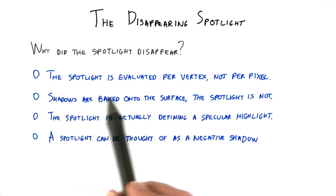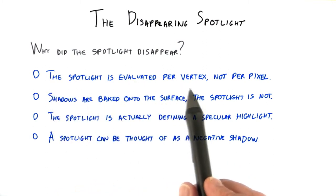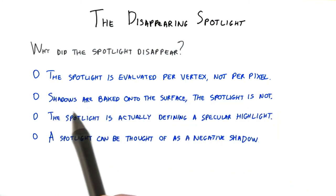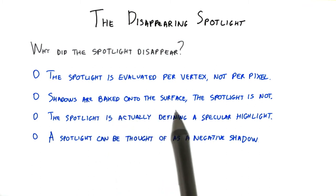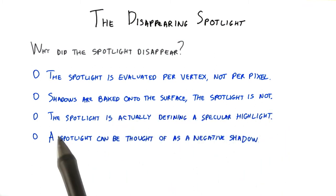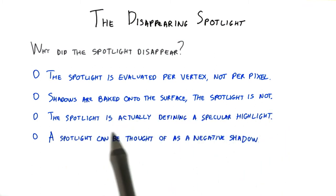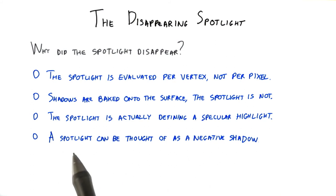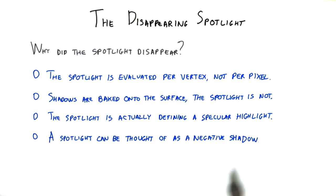The spotlight is evaluated per vertex, not per pixel. Shadows are baked onto the surface. The spotlight is not. The spotlight is actually defining a specular highlight. A spotlight can be thought of as a negative shadow.